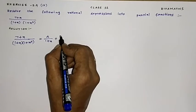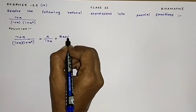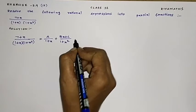For 1 + X squared, which splits, we need 2 constants, so we write BX plus C divided by 1 + X².